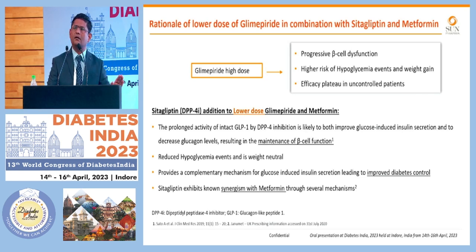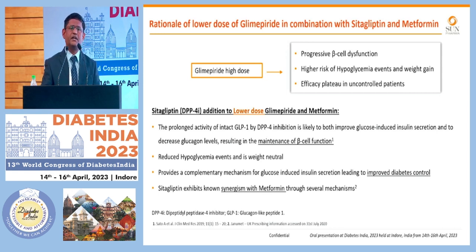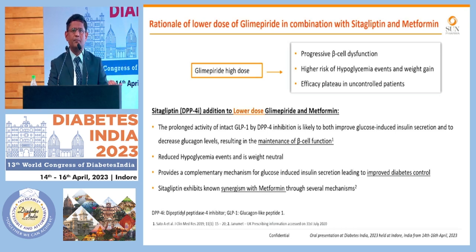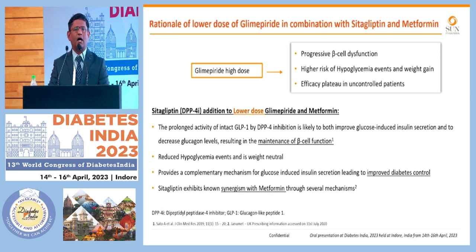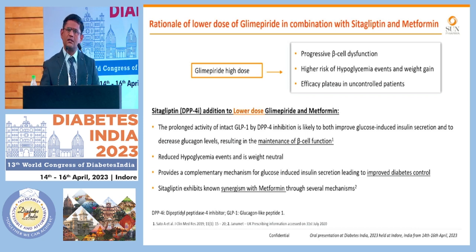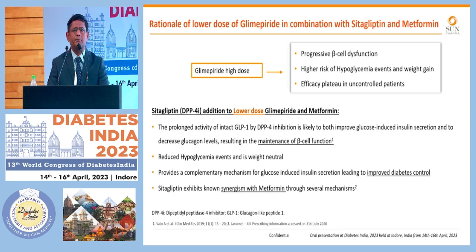Glimepiride is one of the oldest sulfonylureas, good in terms of insulin secretion. However, when we increase the dose of Glimepiride in a graded fashion, we see progressive beta cell dysfunction. The hypothesis is: if we can reduce the dose of Glimepiride and add Sitagliptin and still achieve similar glycemic control and compliance, that would be beneficial. That is where we thought of this study design — adding Sitagliptin, Glimepiride, and Metformin while reducing the Glimepiride dose. The advantage with Sitagliptin, beyond insulin secretion, is that it also acts on glucagon levels, allowing beta cell function to be preserved.